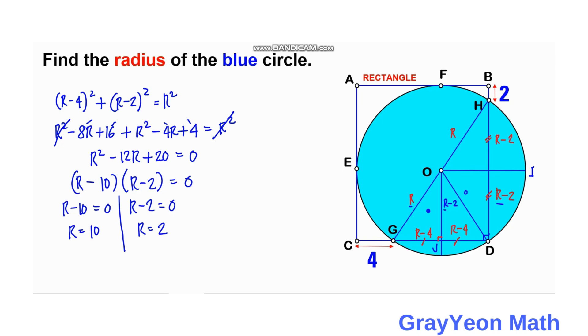Okay, so to check, if we use this 10 from these two, R minus 4 and R minus 2, so we have 10 minus 4 is 6, and 10 minus 2 is 8. And for the other one, so we have R is equal to 2. So R minus 2, if we substitute 2, then this becomes 0.